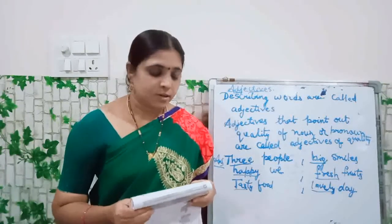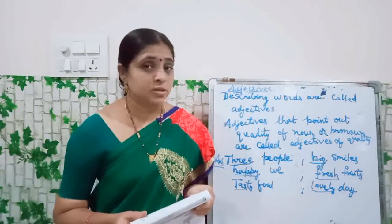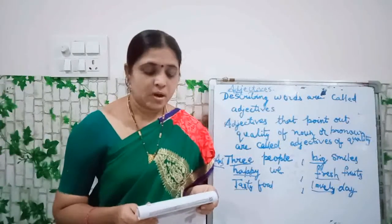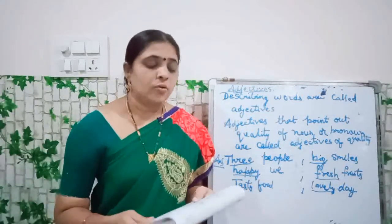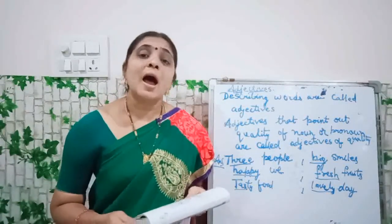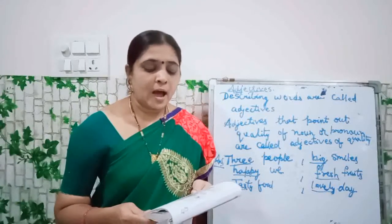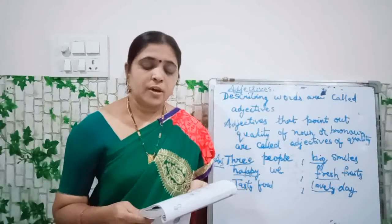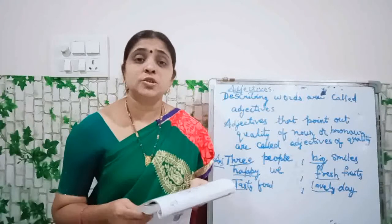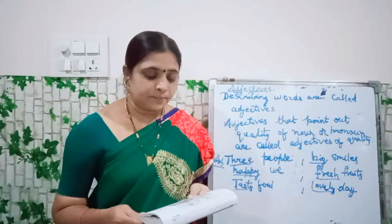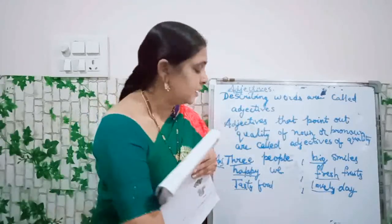Did you all get it, children? Then see grammar part, page number 44. See adjectives — adjectives are the describing words. Read the paragraph given below. Underline the describing words and say which noun or pronoun they describe. See that picture and read the paragraph and you have to underline the adjectives. Three people from my family and I went on a picnic. We were very happy. We had big smiles on our faces. We have taken fresh fruits and tasty food with us on the picnic. I had a lovely day. First, underline 'three' — three people.